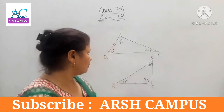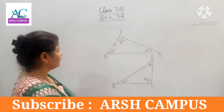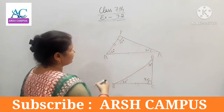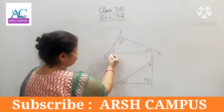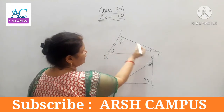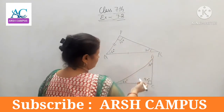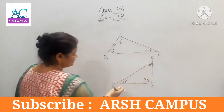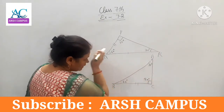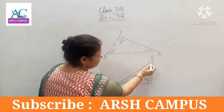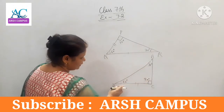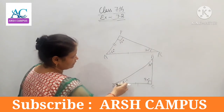Two angles are congruent. Triangle PQR: angle Q is 60 degrees, angle P is 90 degrees, and angle R is 30 degrees. Triangle ABC: angle A is 30 degrees, angle B is 60 degrees, and angle C is 90 degrees.